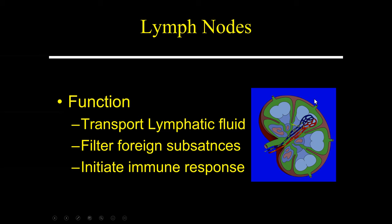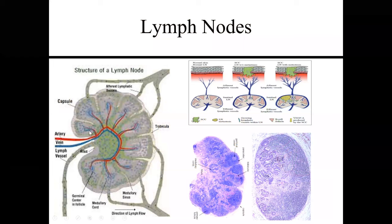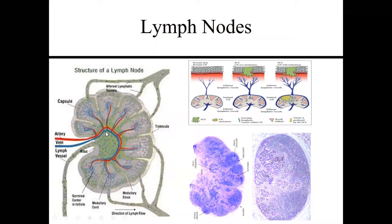Anything bad that comes in eventually gets filtered through the lymph nodes. The arteries enter through a hilum and the veins exit through the hilum. The lymphatic vessels bringing all the junk into the lymph nodes enter through the periphery, eventually work their way centrally, and then leave the lymph node through the central hilum. When you look at various metastatic deposits, they involve the lymph nodes from the periphery.